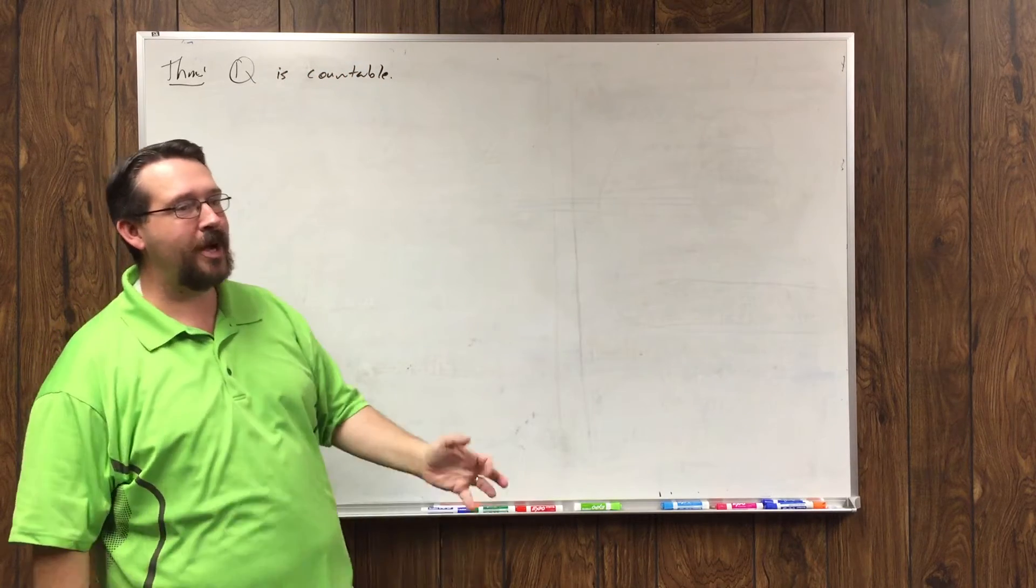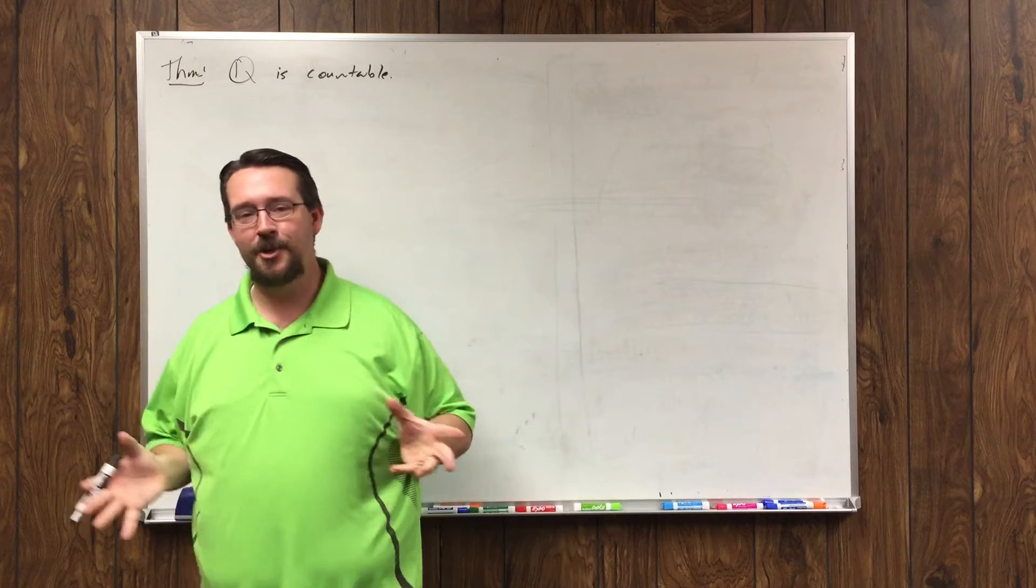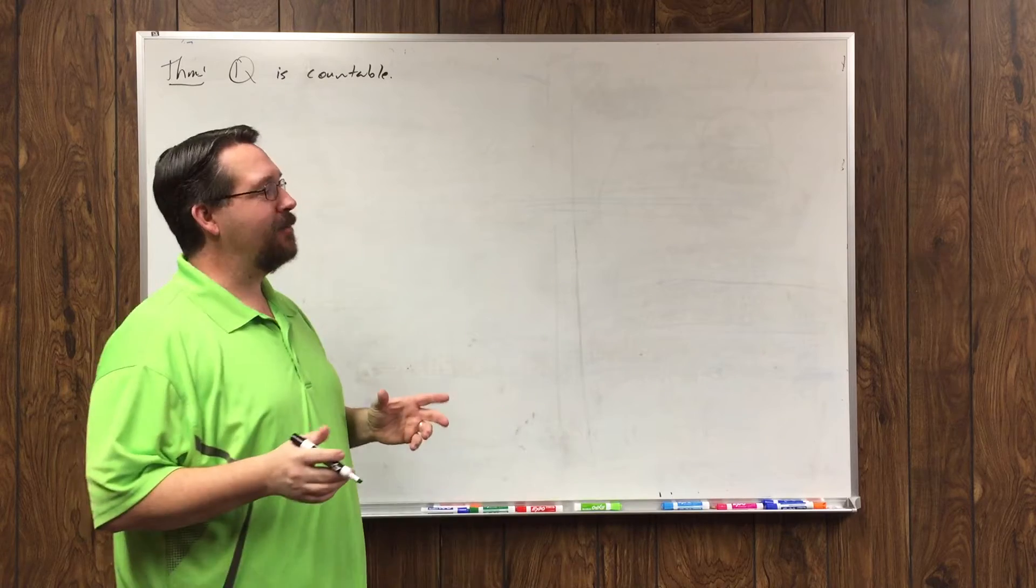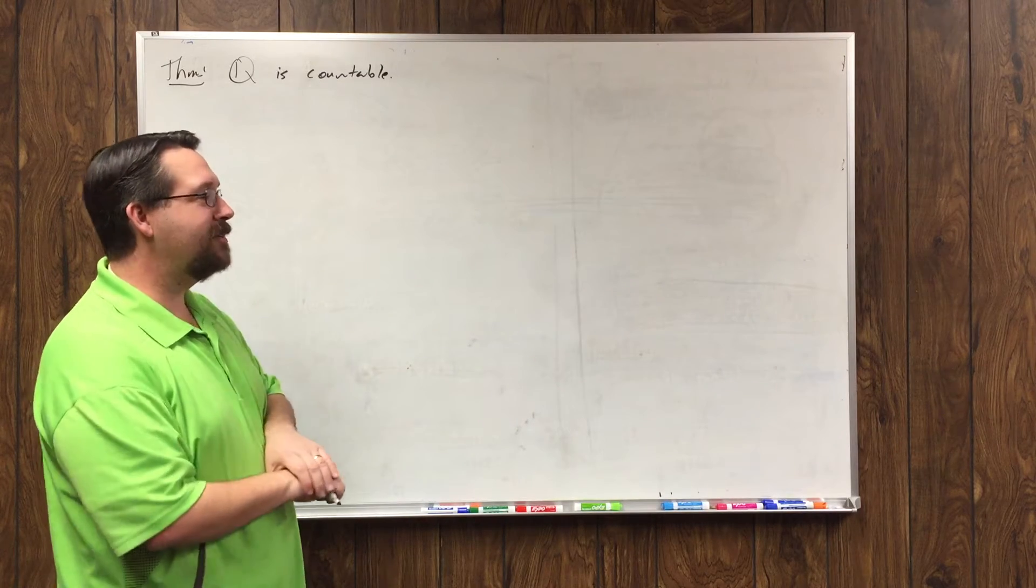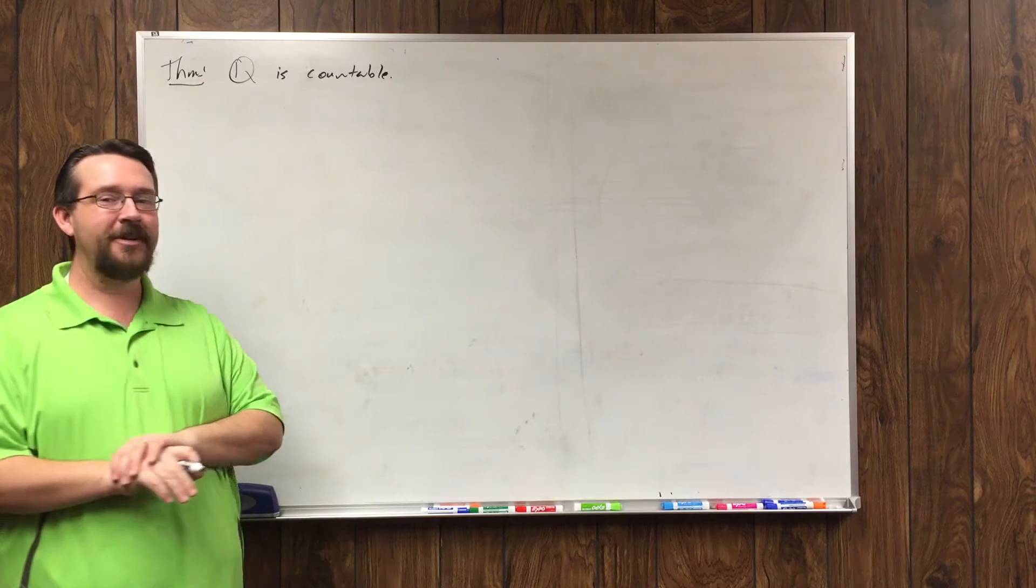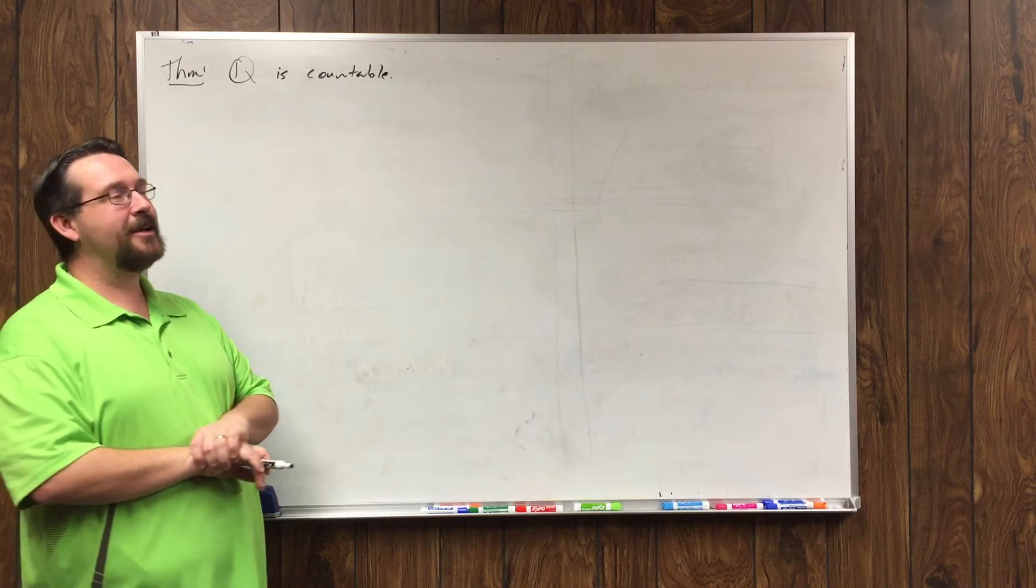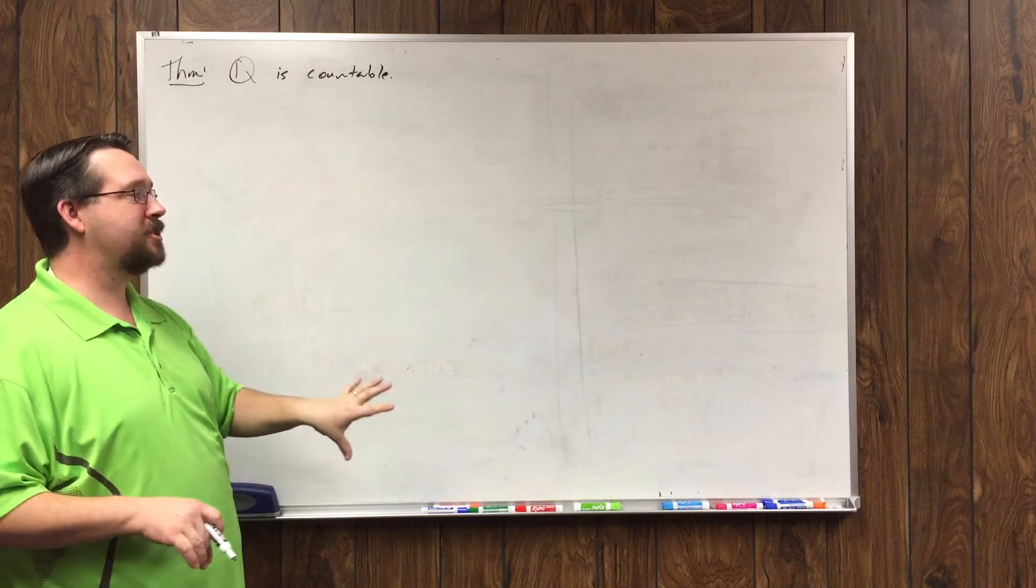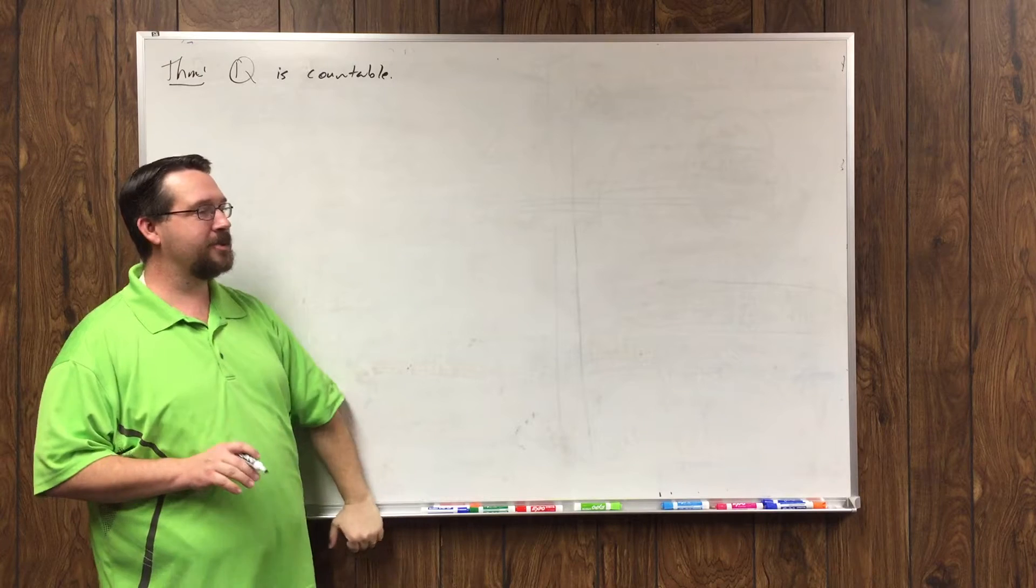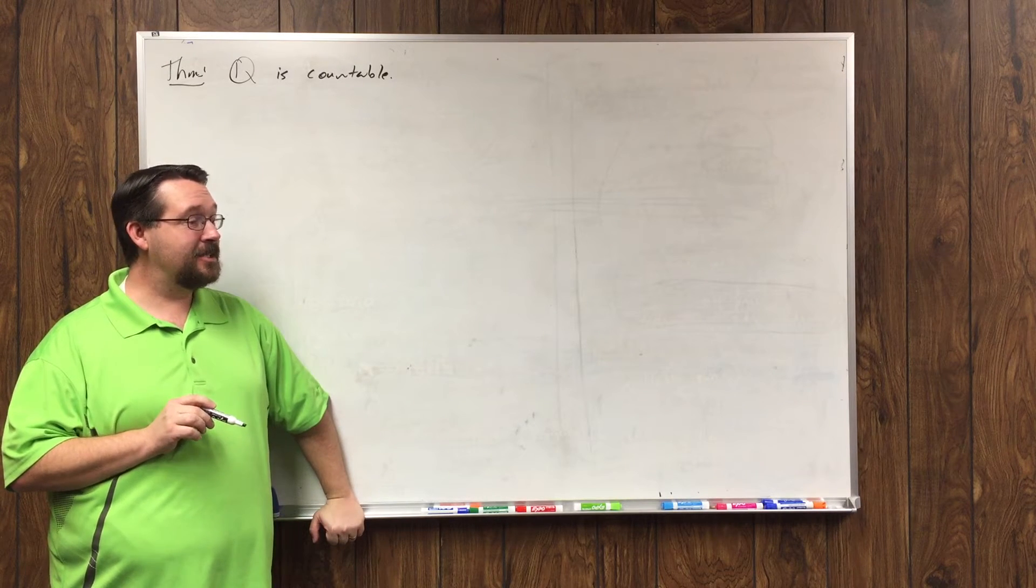And I'm going to do a proof by picture again that is not probably rigorous enough to pass muster in all mathematical journals, but it will be good enough for us in this class. And really what I'm going to do is I needed to do this here and not earlier when we did the Cartesian product of natural numbers, because I need that surjective property to make this nice and easy to do.